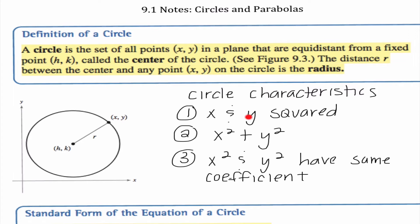There are three things that allow us to know that something is a circle. First, both x and y need to be squared. Secondly, we need to have addition between those squared terms. And lastly, x squared and y squared need to have the same coefficient.